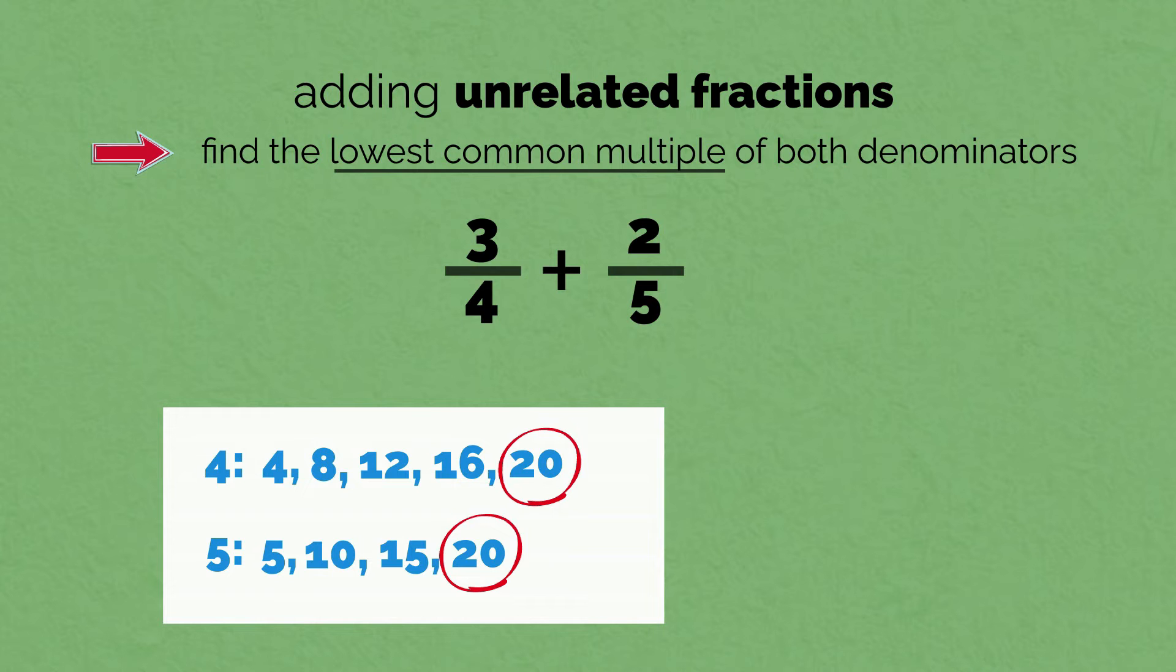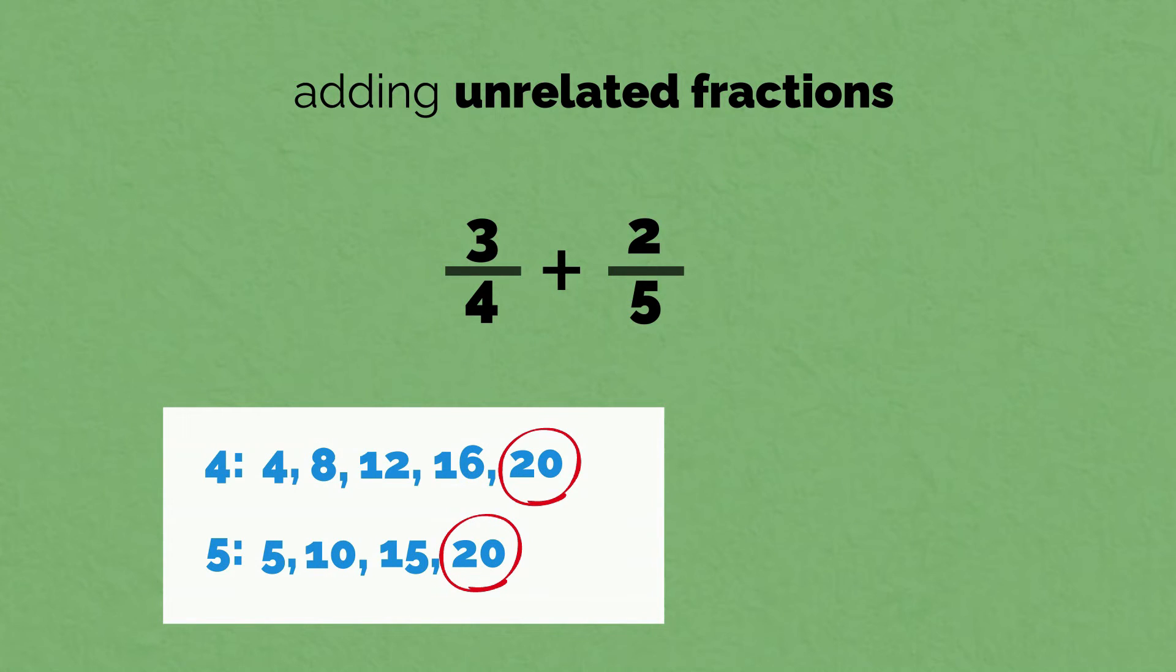Well, we weren't able to convert 4ths into 5ths. But we can convert 4ths into 20ths and then convert 5ths into 20ths. In this way, we can turn these unlike fractions into like fractions. Now that we know the lowest common multiple is 20, let's get started.